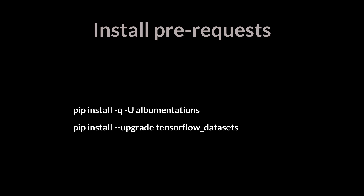To begin our implementation, we need to install two main libraries: Albumentations and TensorFlow Datasets. Albumentations is a Python library for fast and flexible transform operations optimized for performance, providing a concise yet powerful image augmentation interface for different computer vision tasks. TensorFlow Datasets contains a collection of datasets ready to use with TensorFlow.